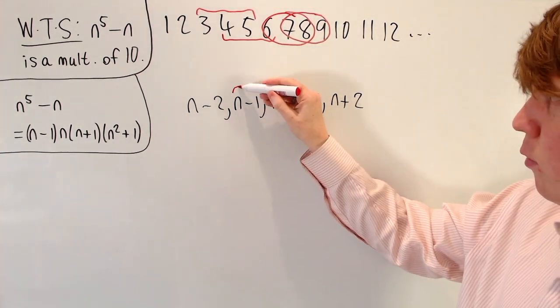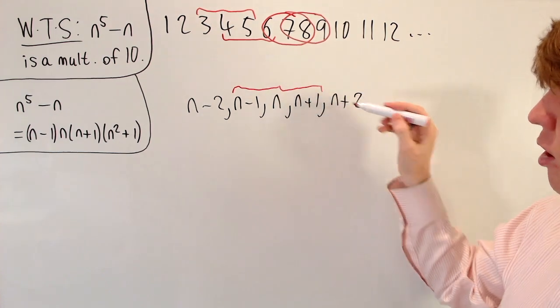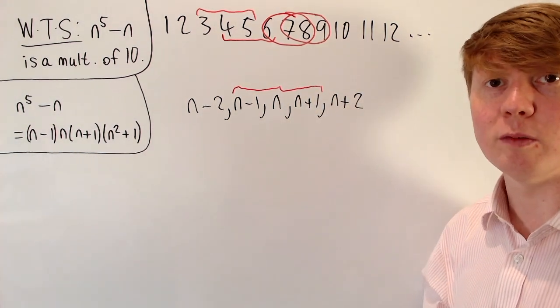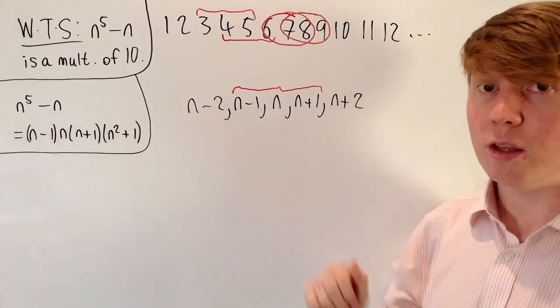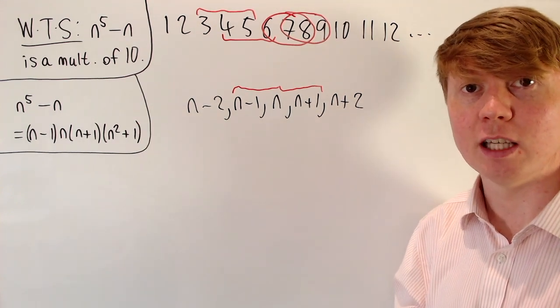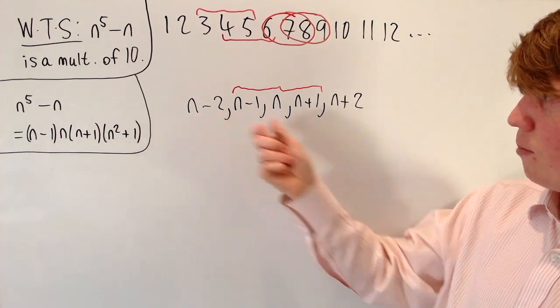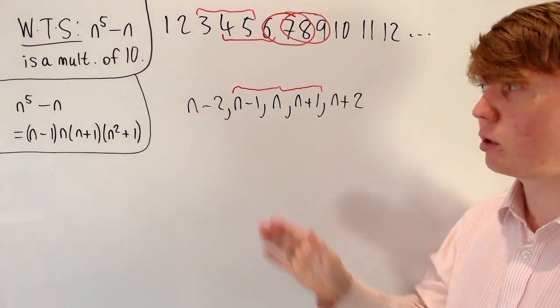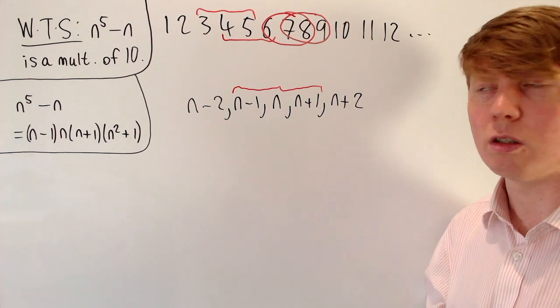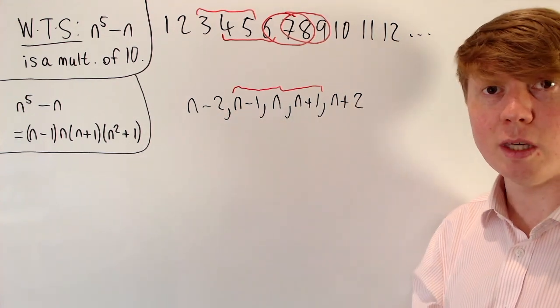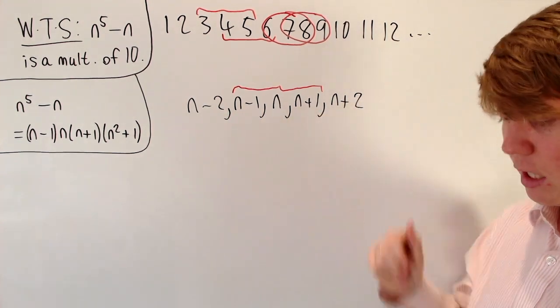You can see that if any of n plus 1, n, or n minus 1 are a multiple of 5, then we've got the n to the 5 minus n is definitely a multiple of 5. And if not, then one of n minus 2 or n plus 2, because we've now got five consecutive integers, one of these two must be a multiple of 5, if none of these in the middle are.